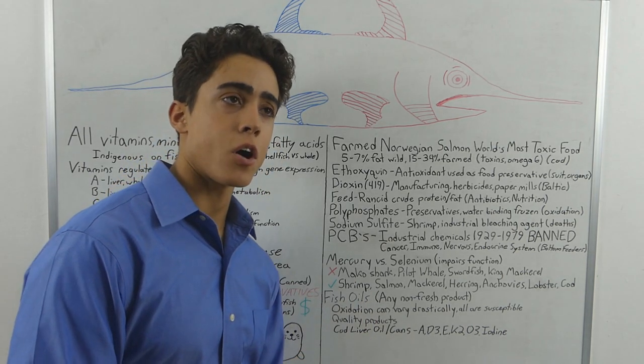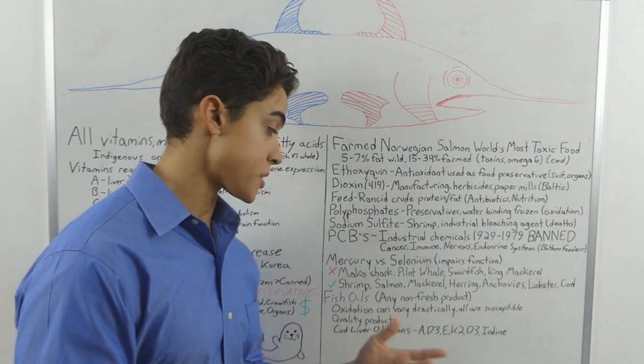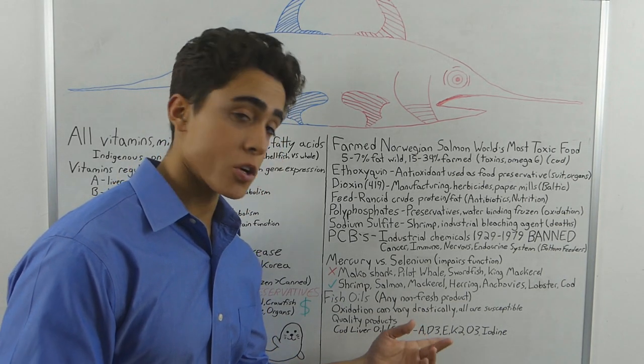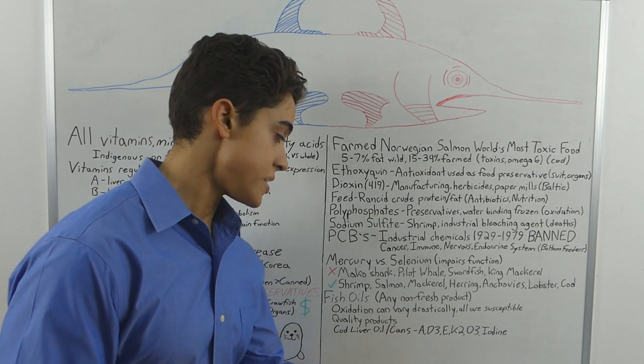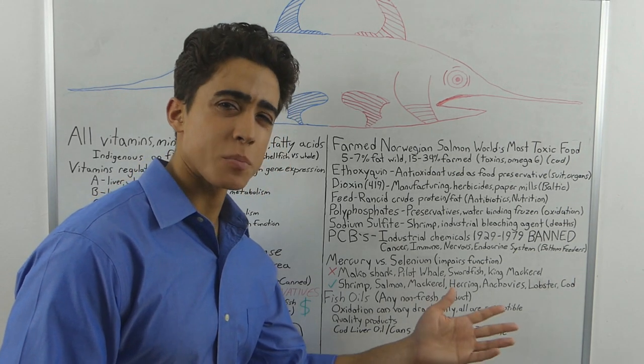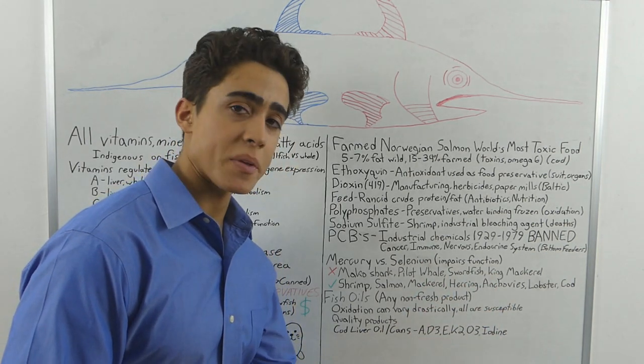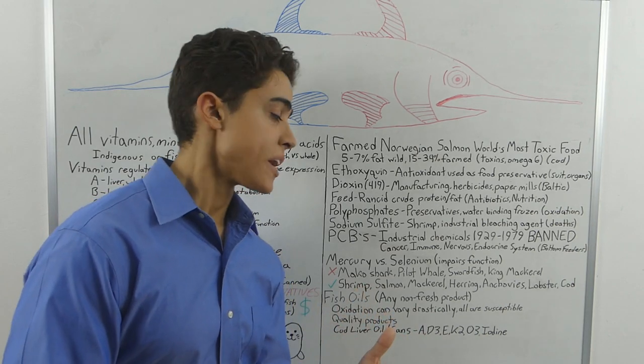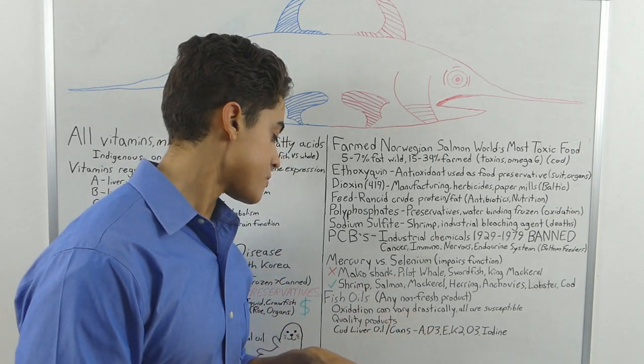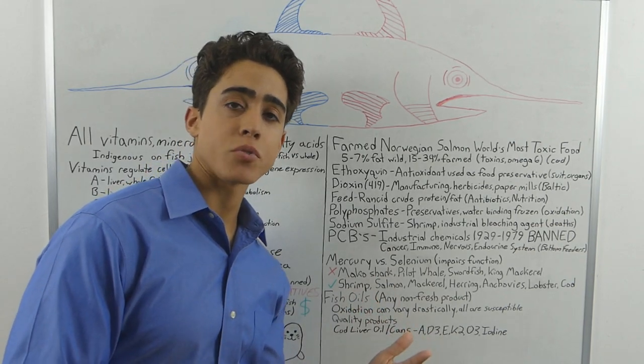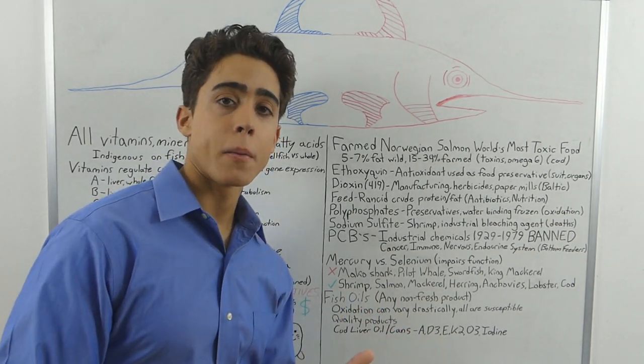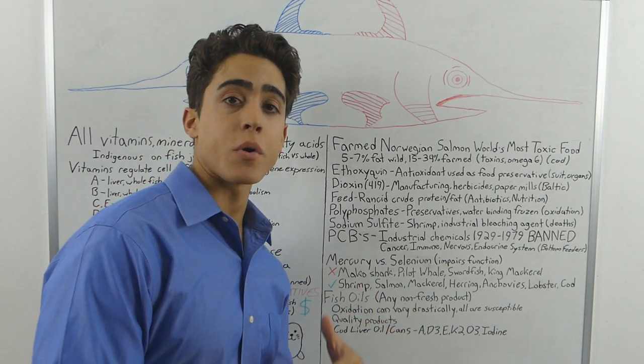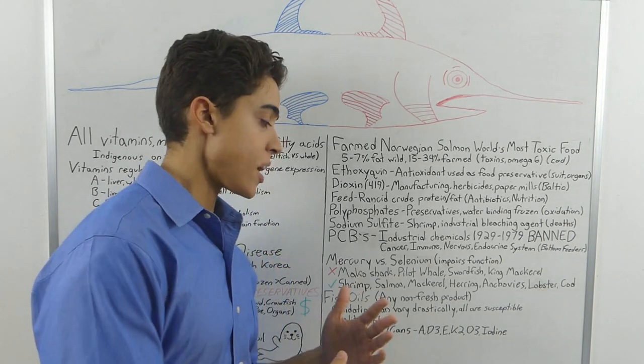Cod liver oil and canned cod liver are things that I am a big proponent of because canned cod liver literally has all the vitamins and things you need that most people are deficient in. It has vitamin A, D3, vitamin E, possibly in smaller amounts depending on the oxidation. It has vitamin K2, omega-3 fatty acids, and iodine. Cod liver is a powerhouse. It's a superfood. And it's certainly better to have oxidized fish products in your diet that have nutrients than to not have them at all. But this relates specifically to the person's individual ability to deal with oxidative stress.